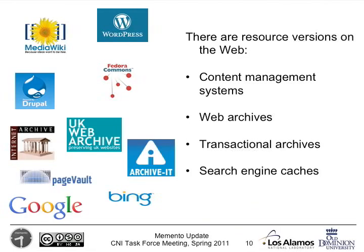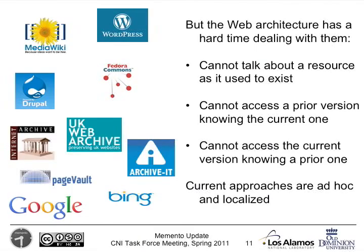There are various resource versions online in content management systems such as MediaWiki or WordPress, in web archives such as the Internet Archive, the UK web archive, Archiveit and so forth, transactional archives, and search engine caches. But at an architectural level, the web has a very hard time dealing with these things. You can't talk about a resource as it used to be — you can only talk about the resource as it is now. The web is always in the present and never talking about the past.